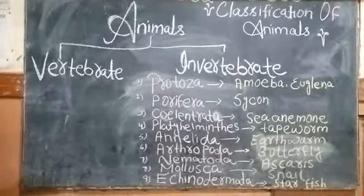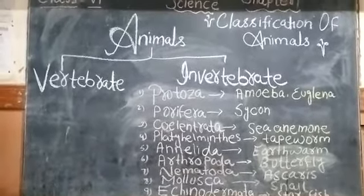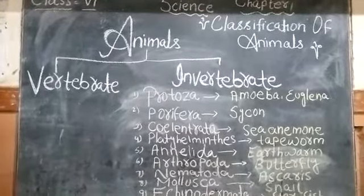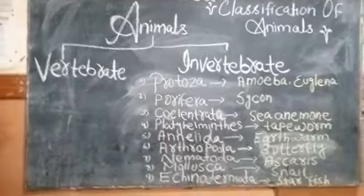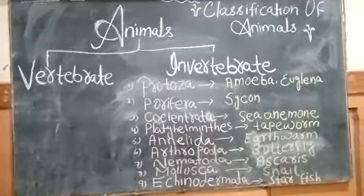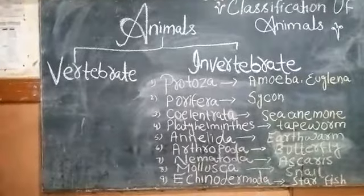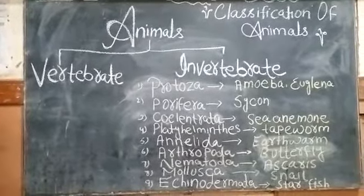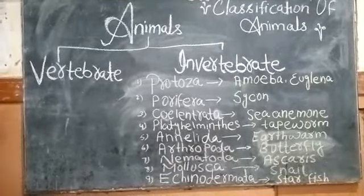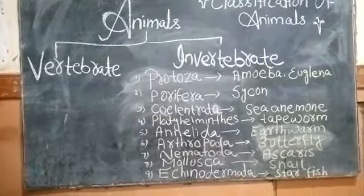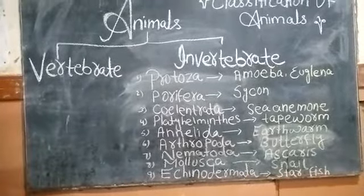Number 5: Phylum Annelida. Animals in this phylum have segmented bodies. We will see an example in the mud — the Earthworm. The earthworm has a segmented body.